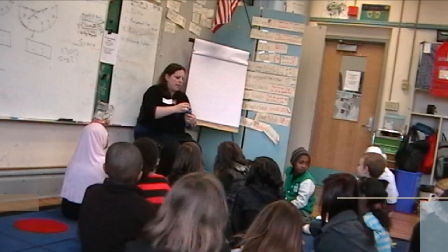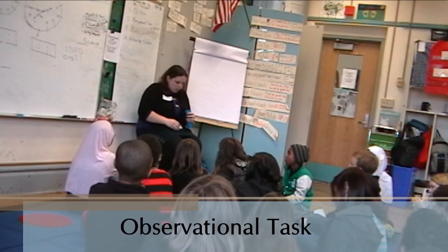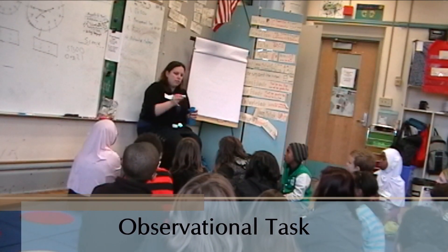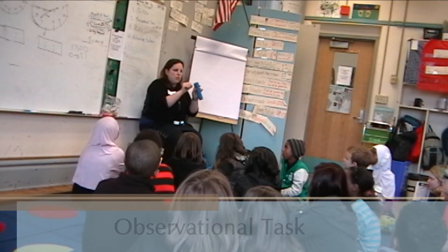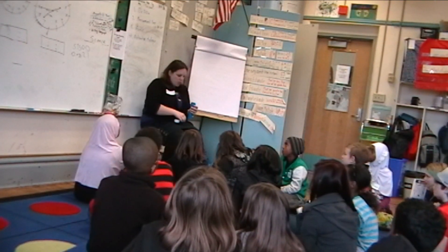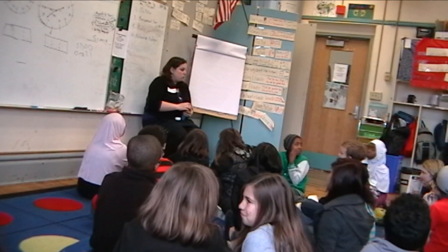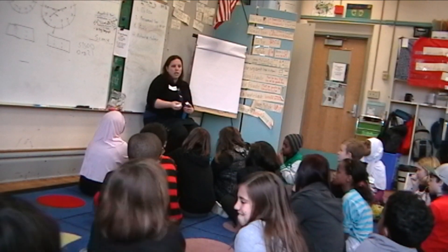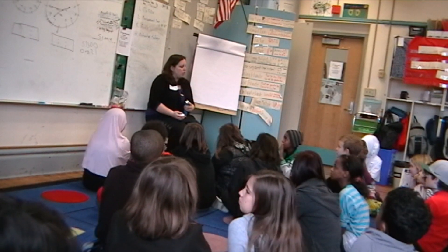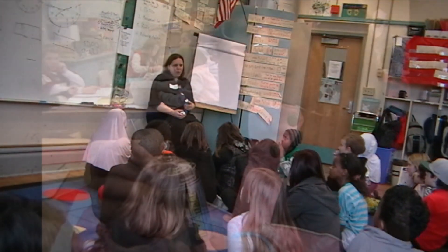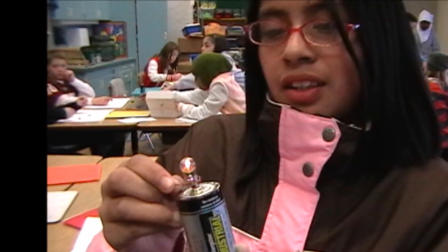We are going to give you light bulbs like the one that is in there, some batteries, and some wires—in this case a metal strip. You will get a piece of metal instead and try to figure out which ways make a light bulb turn on and which ways don't. We're going to give you space in your notebook to draw four ways that work and four different ways that don't work.